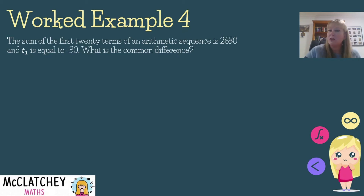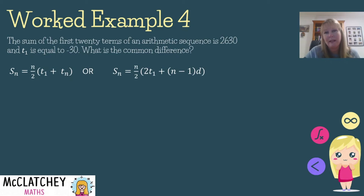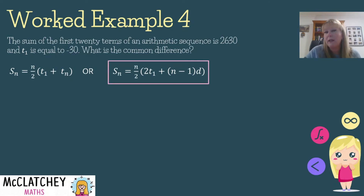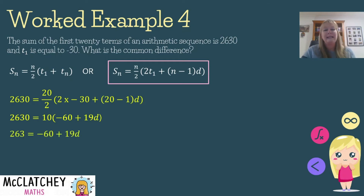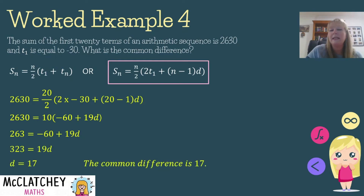Worked Example 4: The sum of the first 20 terms is 2630 and the first term is −30. Find the common difference. We use the second formula since we don't know the last term. Substituting and simplifying: 2630 = 10 × (−60 + 19d). Dividing both sides by 10, then adding 60 to both sides and dividing by 19 gives a common difference of 17. Always check your work by substituting back in.